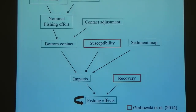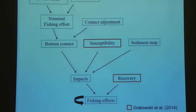Here is a big 30,000-foot look at how the model runs and the basic inputs. Number one, we need to know where fishing is happening. We need to know what type of gear, and in particular how big the gear is, and where the fishing is happening. We also need to know — even though gear is deployed, it's not always in contact with the bottom — how much that gear actually contacts the bottom. And then we need to know how susceptible the benthic features we're concerned about are to being contacted with that gear.